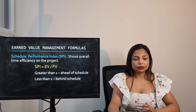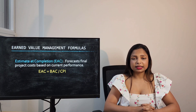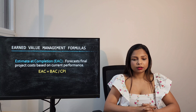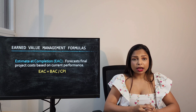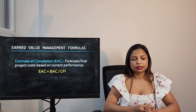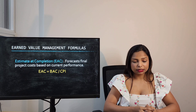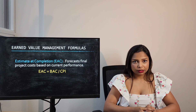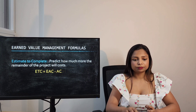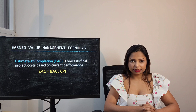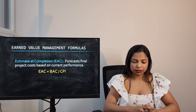Estimate at Completion, or EAC, forecasts the final project cost based on current performance. The standard formula to calculate EAC is Budget at Completion divided by Cost Performance Index. There are other formulas as well, but this is the standard one.